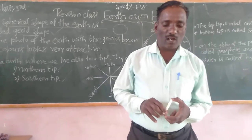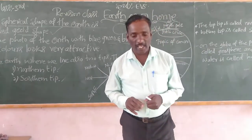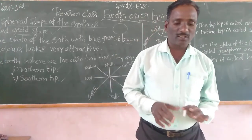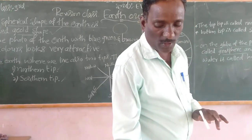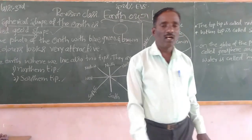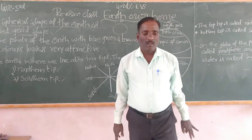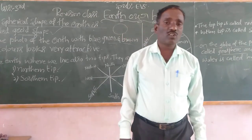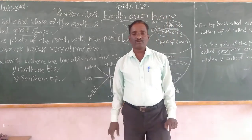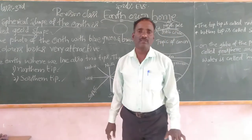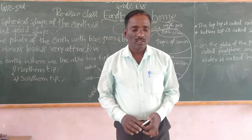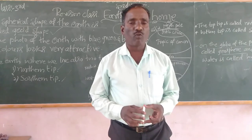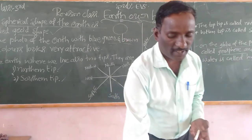On the globe, the portion of land is called Geosphere and the portion of water is called Hydrosphere. The portions of land spread over the globe are called Continents. The portion of water surrounding the continents consists of vast Oceans.